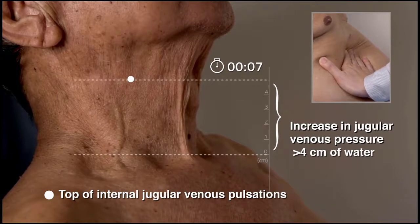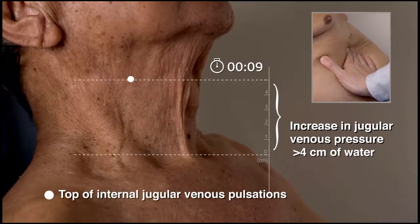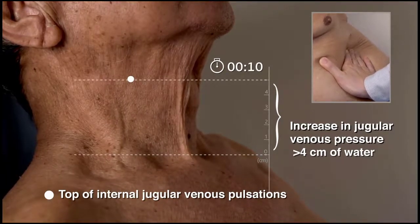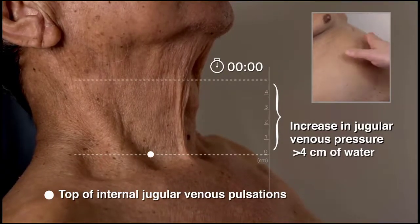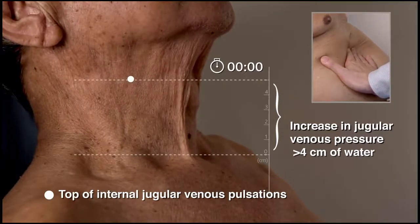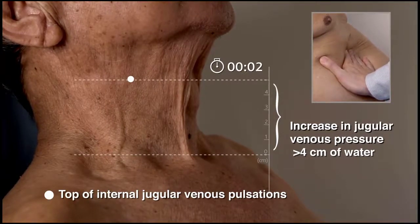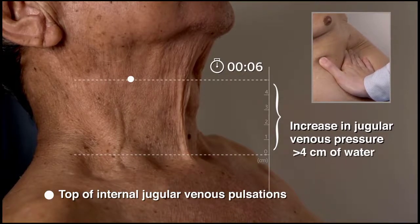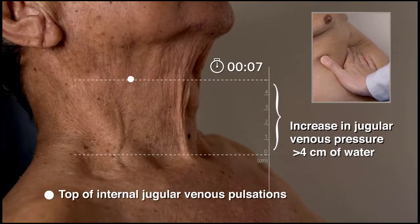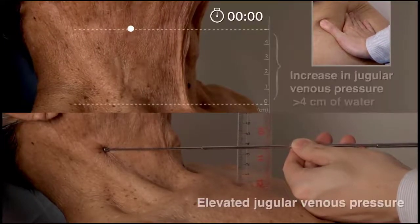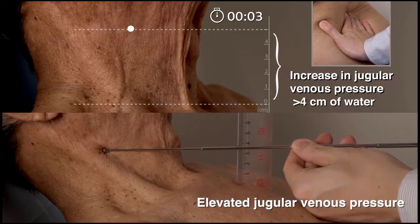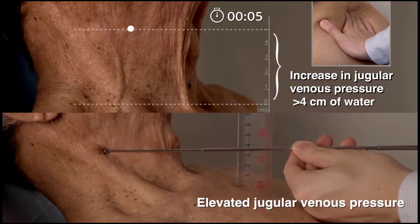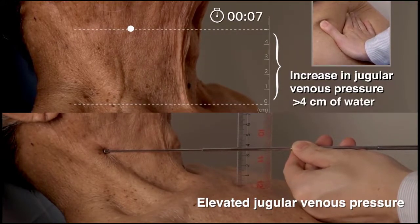An abnormal abdominal jugular reflux test result indicates that right atrial pressure is elevated; in a patient with dyspnea, this finding indicates right-sided heart failure. A normal result decreases the probability that the patient has elevated filling pressure on the right side of the heart. When the abdominal jugular reflux test and jugular venous pressure are combined, they are 80% sensitive and 81% specific for the detection of elevated right atrial pressure.